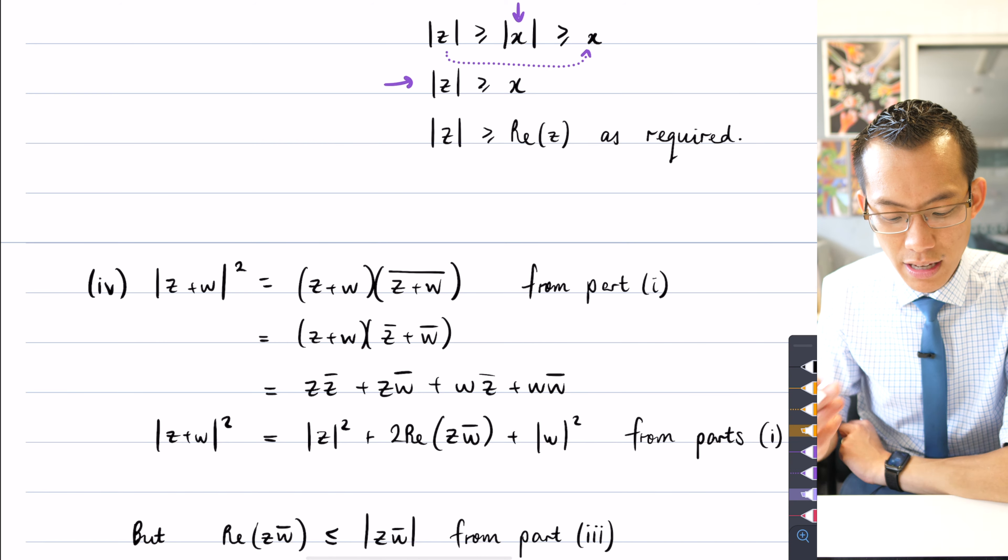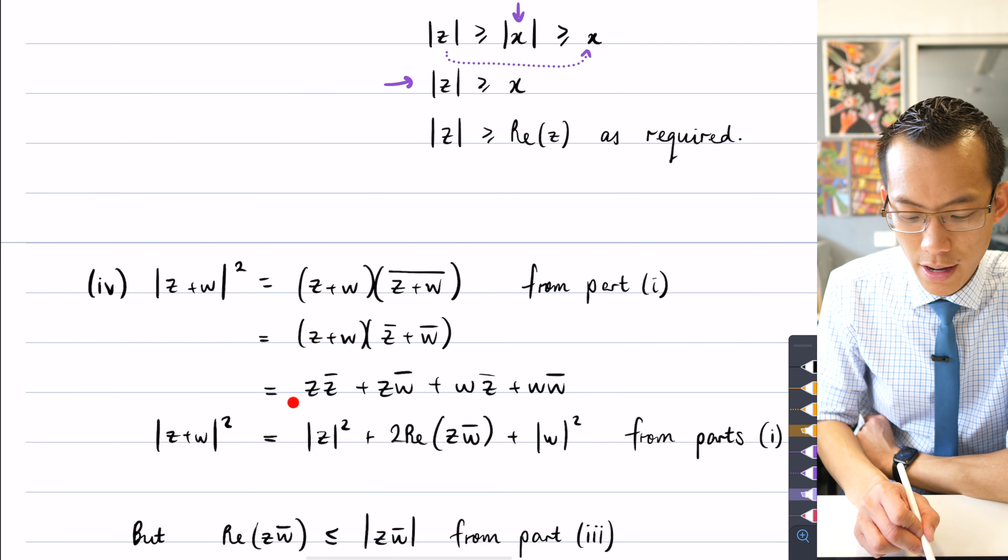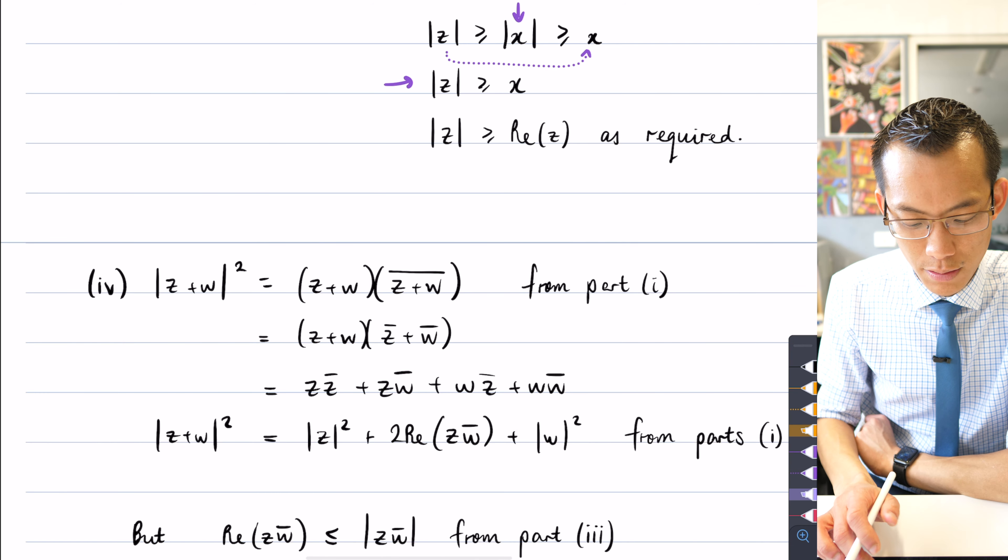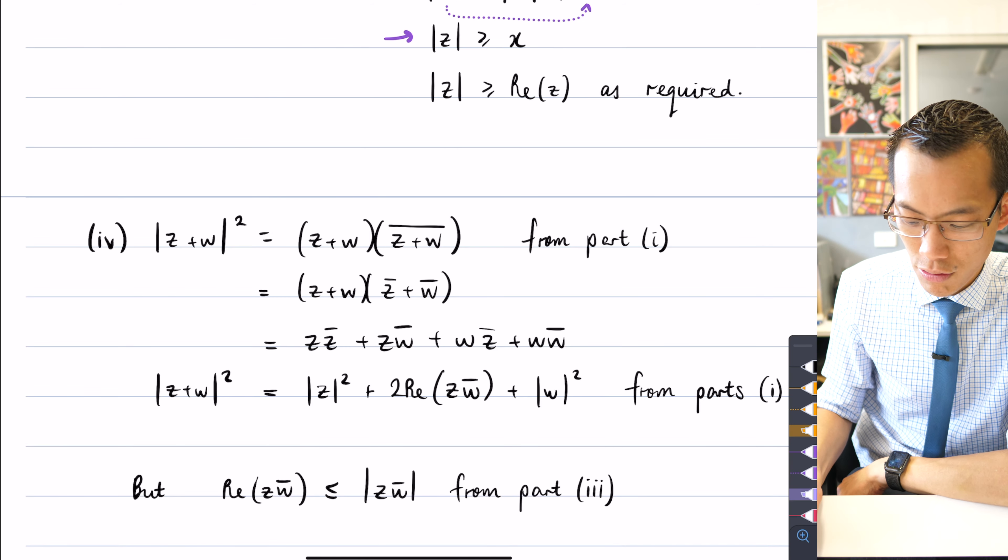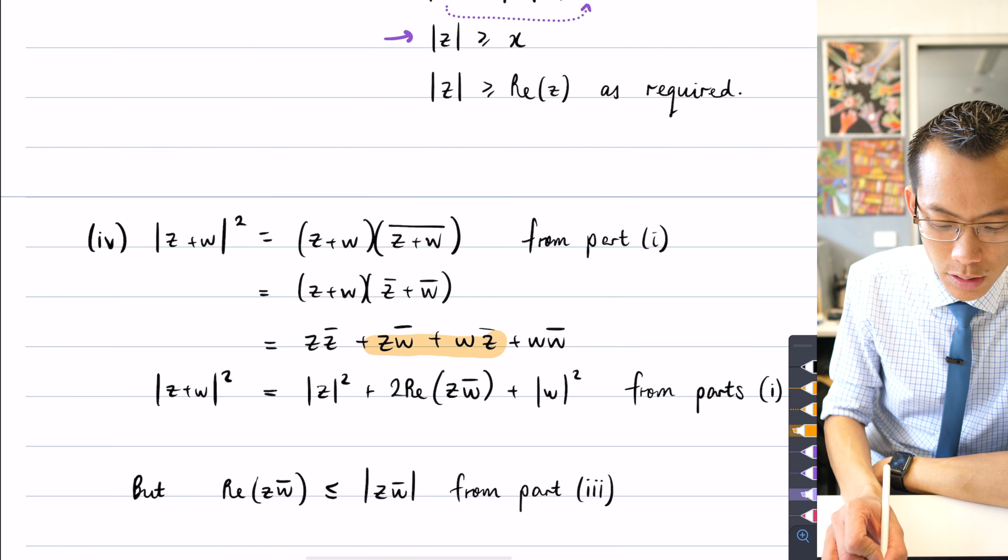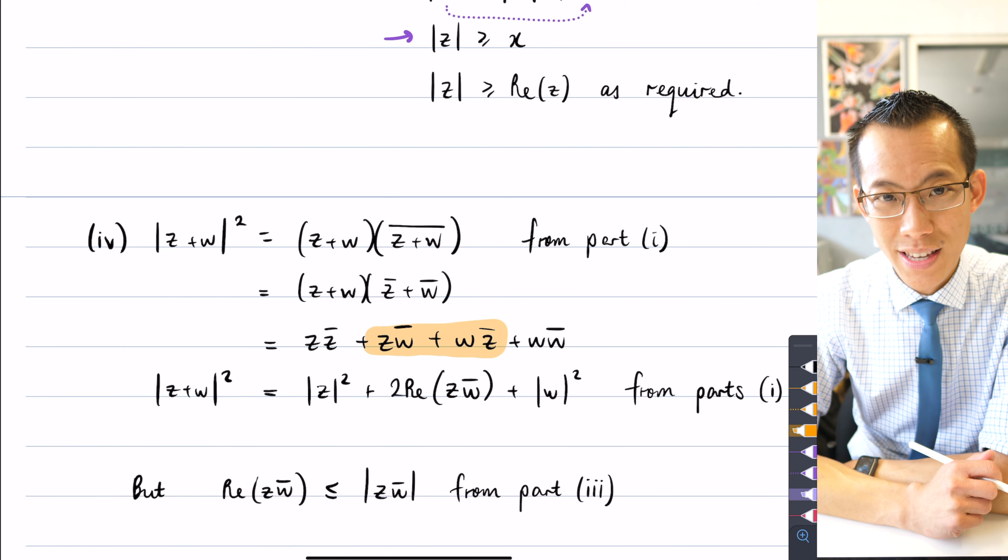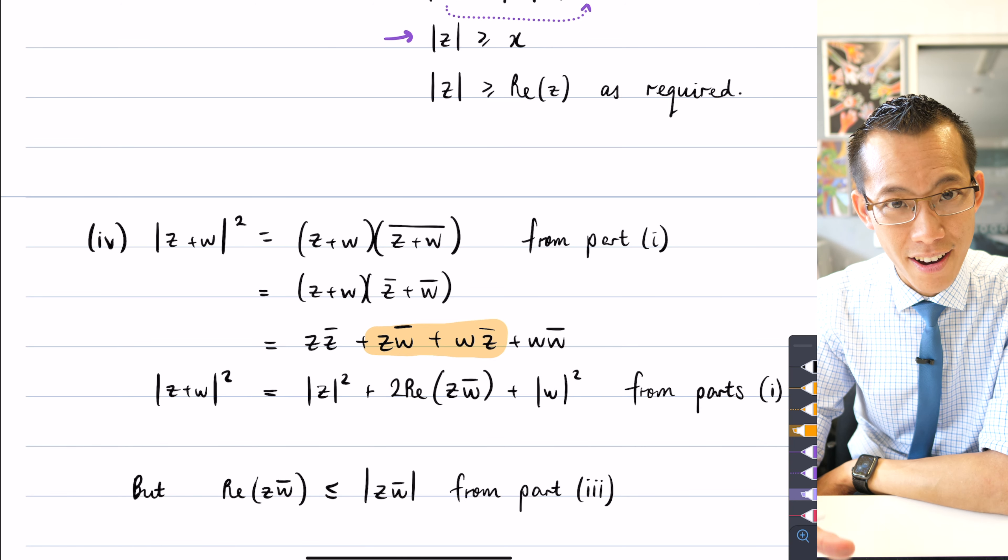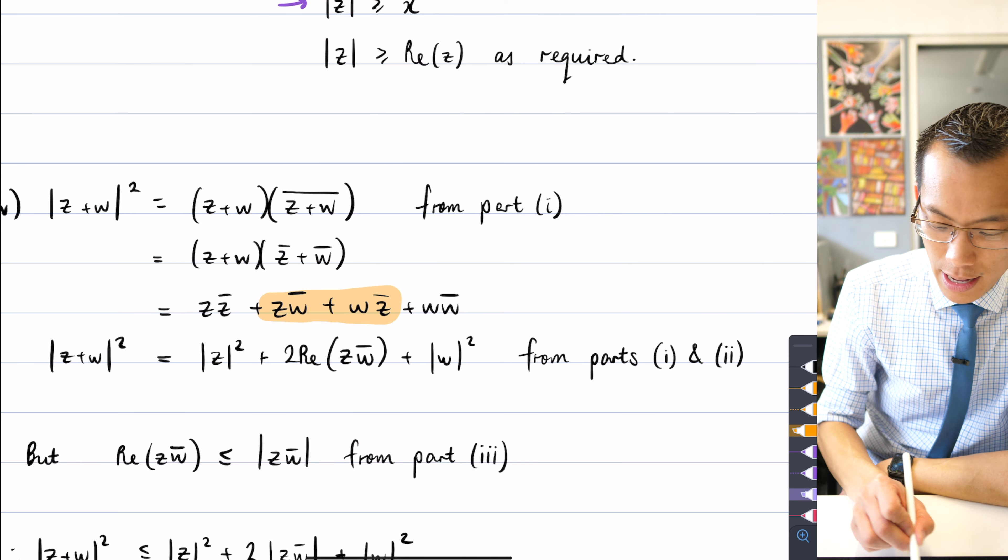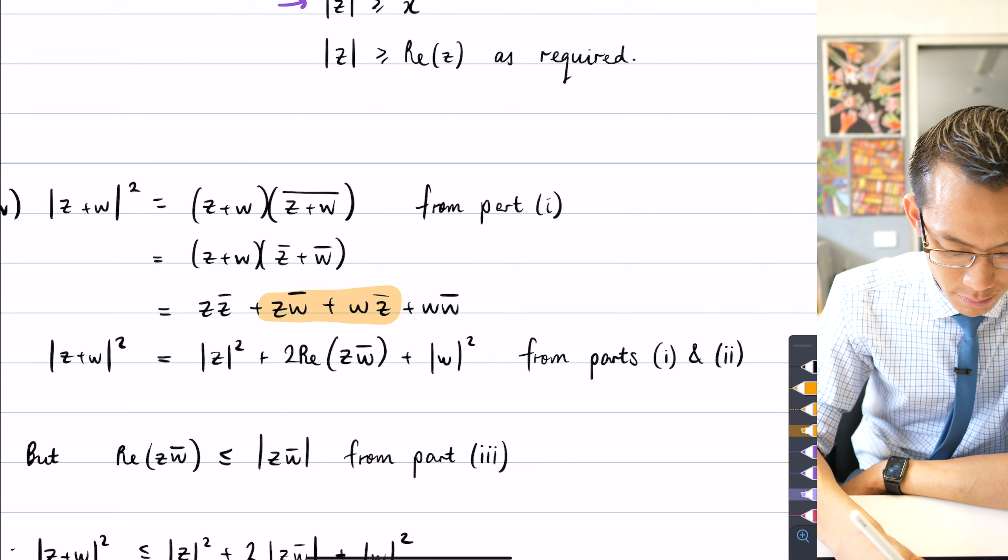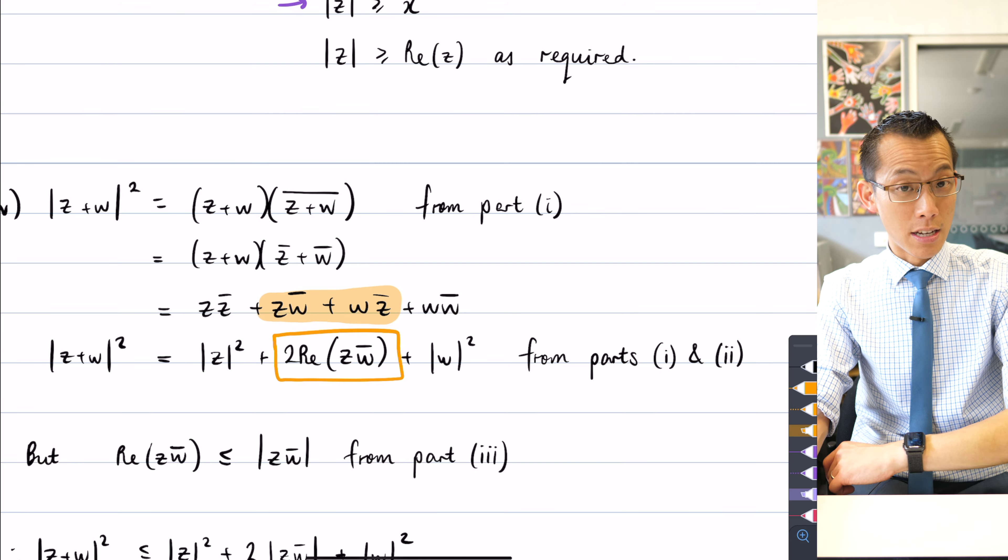And once I've got that, I'm just doing a binomial sort of expansion here. Binomial here, binomial here. And I'm just going to multiply all these terms together. Now I hope when you just did the expansion you then noticed, wait a second, this looks very familiar. This is ZW bar plus WZ bar, which we had worked out in part two was equal to double the real part of ZW bar.